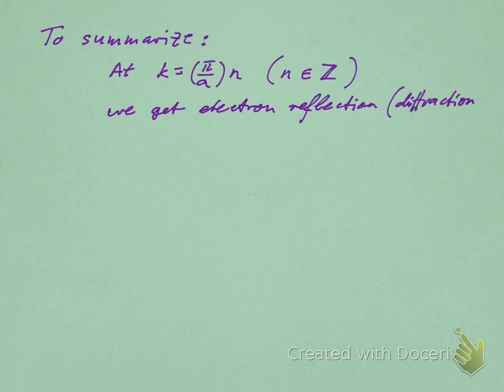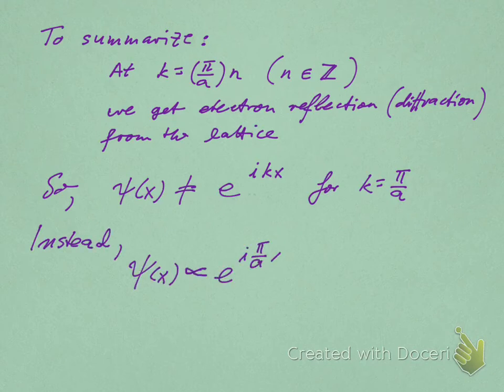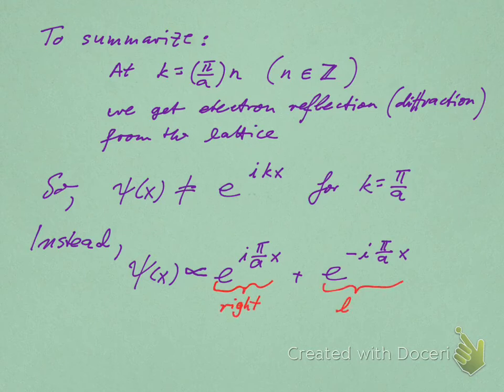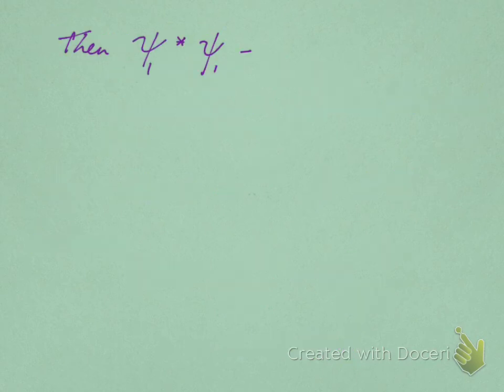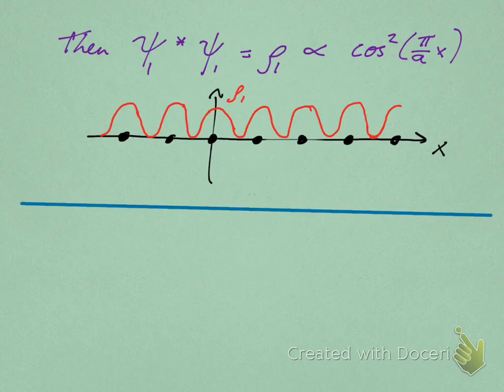In any case, the more important point now is that at these special k values we get reflection or diffraction from the lattice. And the wave function ψ(x) can now no longer be represented by e^(ikx). Why is that? Because that represents simply only a right-moving electron. Instead, we need a right-moving and a left-moving electron. Here's one moving to the right, but part of the wave function also has to represent the reflected part, so the left-traveling electron. And therefore, we get, using Euler's formula, we get 2 times the cosine of π/a times x. Then when we look at the probability density, we have to do ψ* ψ, and that is then giving us just simply a cosine squared. If I draw that on the x-axis, that's what it would look like.